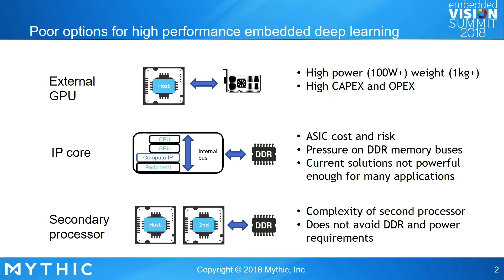As people watching some of the earlier presentations heard, they talked a lot about memory bandwidth issues and memory caches. And as Ren pointed out, many of these solutions are limited to one chip — you're trying to keep it all on one chip. You can probably afford maybe 10 watts in an embedded application before you get into a lot of cooling and other mechanical issues. But the IP cores can be effective if they're sized correctly.